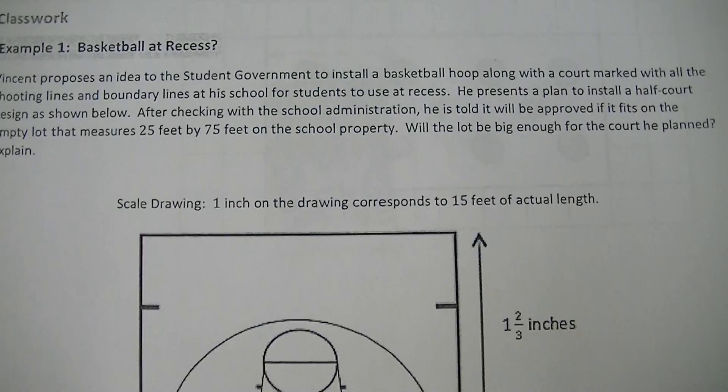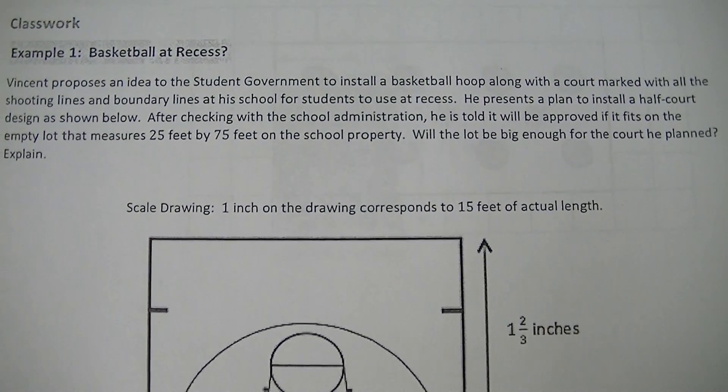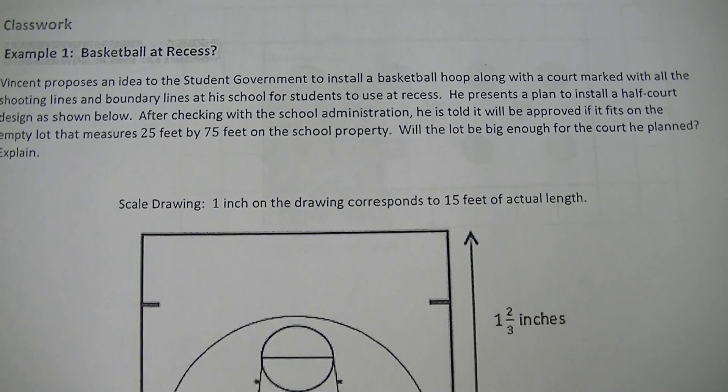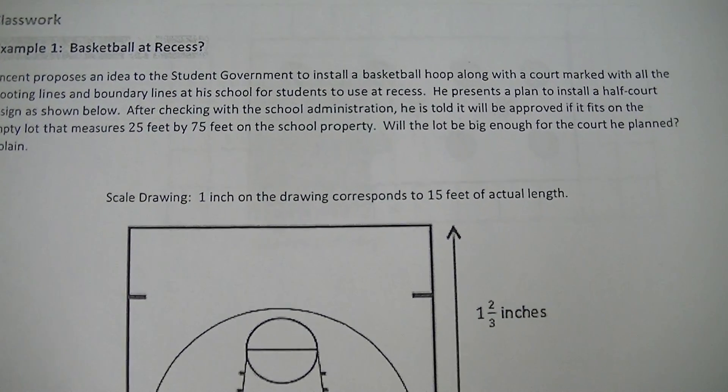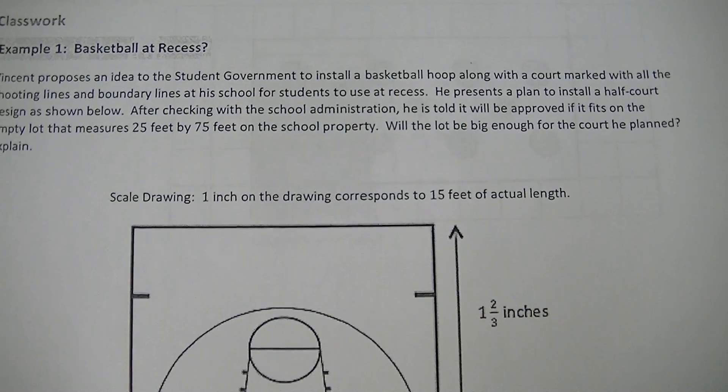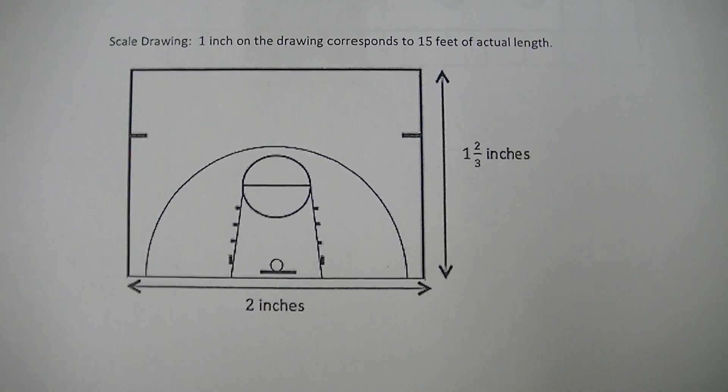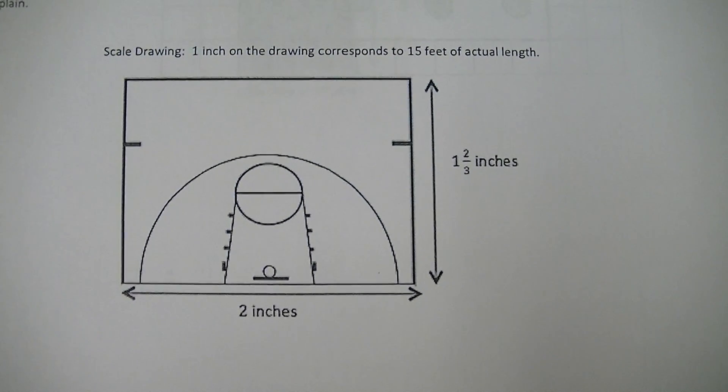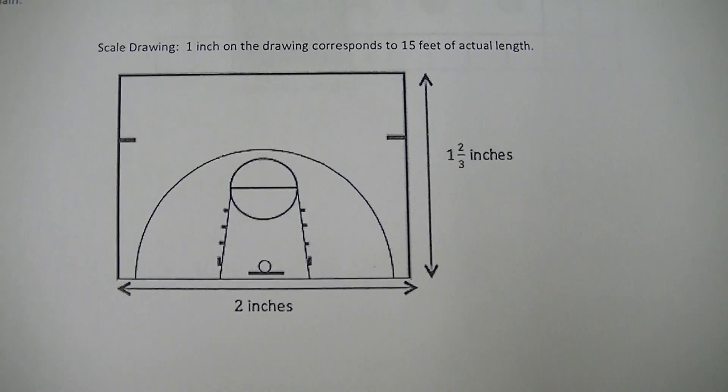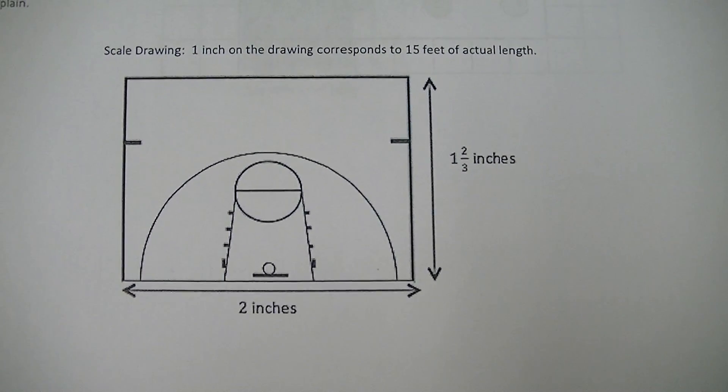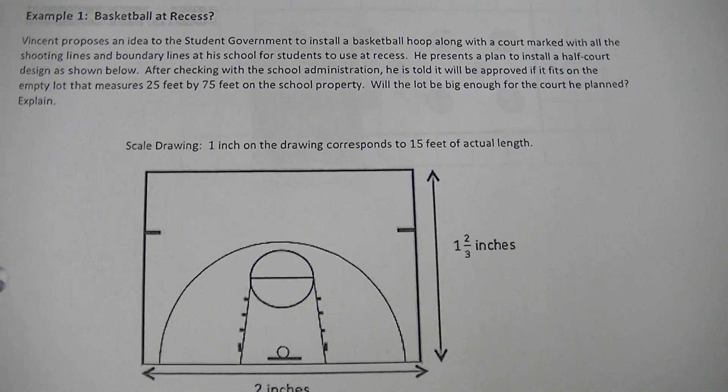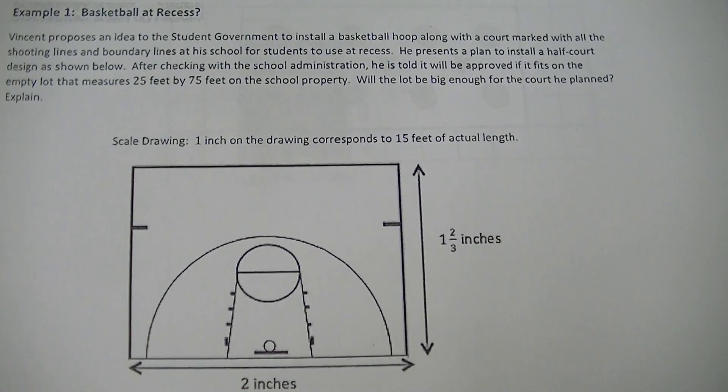Vincent proposes an idea to the student government to install a basketball hoop along with a court marked with all the shooting lines and boundary lines at a school for students to use at recess. He presents a plan to install a half court design as shown below. After checking with the school administration, he is told that it will be approved if it fits on the empty lot that measures 25 feet by 75 feet on the school property. Will the lot be big enough for the court he planned? Explain.